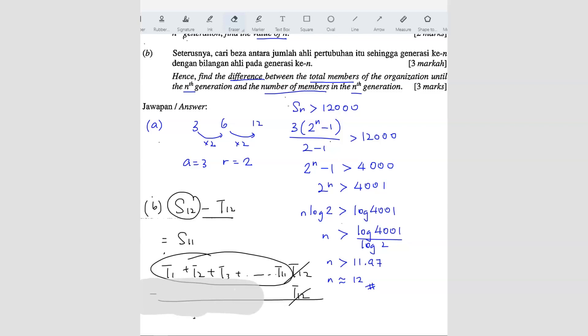So this is a faster way. If you capture this, then you can straight away do that. If you didn't notice that, you can just do the manual way. Also can, the long way. You still get the answer, don't worry. So S11 would be 3 times 2 power 11 minus 1 over 2 minus 1. So your answer is 6141.